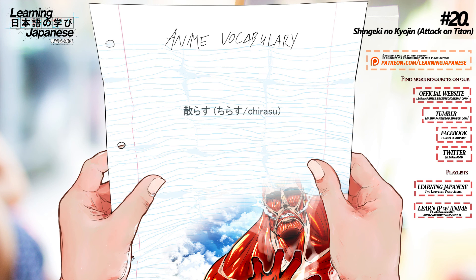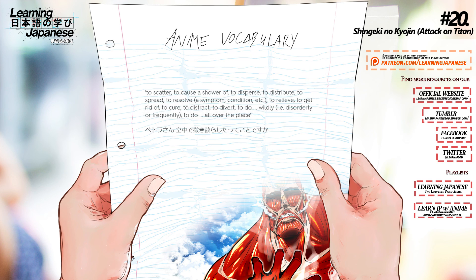散らす (chirasu) — To scatter, to cause a shower of, to disperse, to distribute, to spread, to resolve, to relieve, to get rid of, to cure, to distract, to divert, to do wildly, to do all over the place.